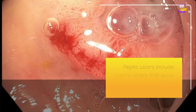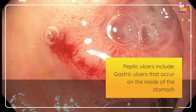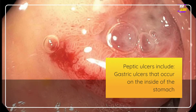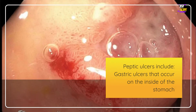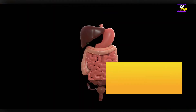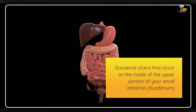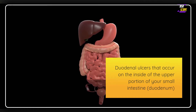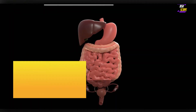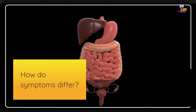Peptic ulcers include gastric ulcers that occur on the inside of the stomach, and duodenal ulcers that occur on the inside of the upper portion of your small intestine, the duodenum. How do symptoms differ?